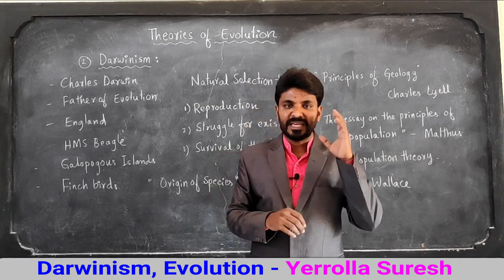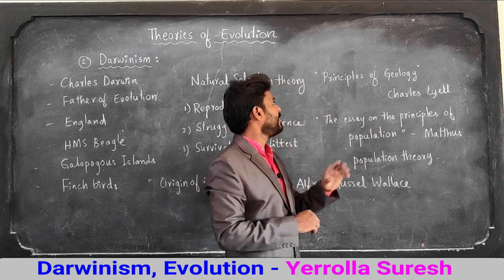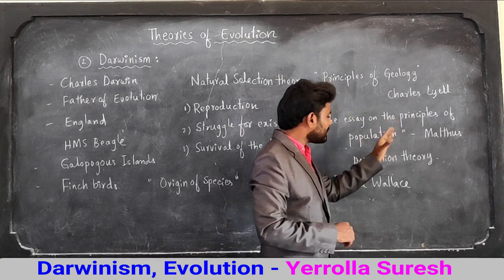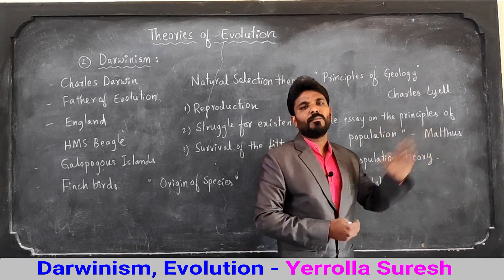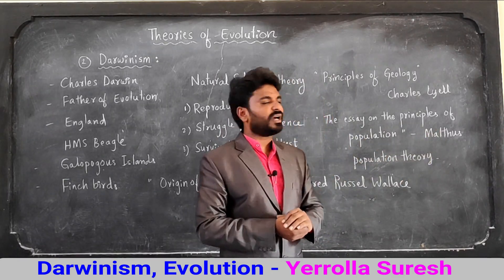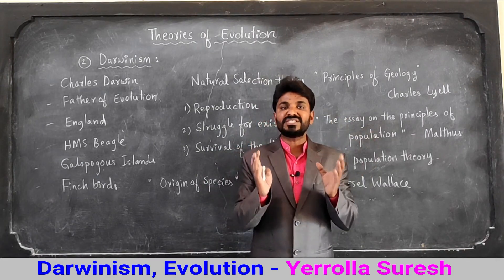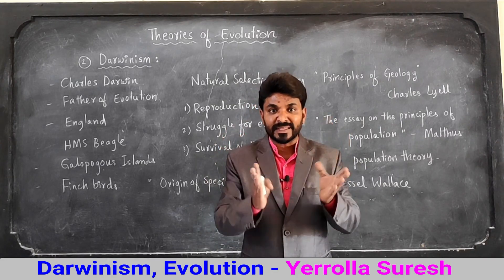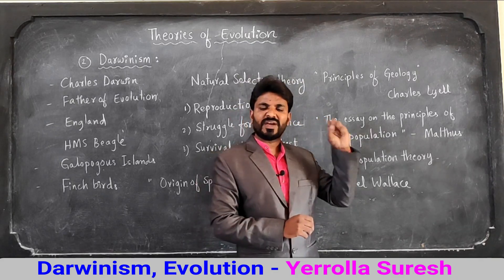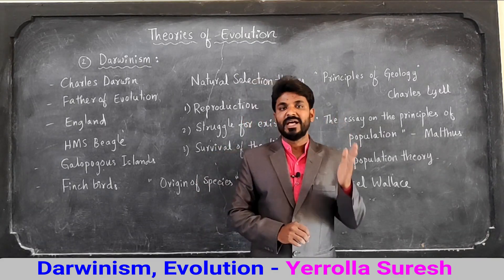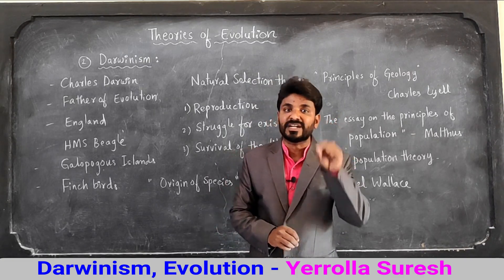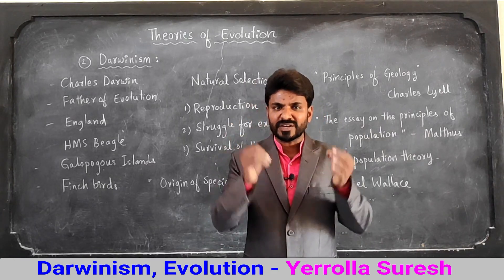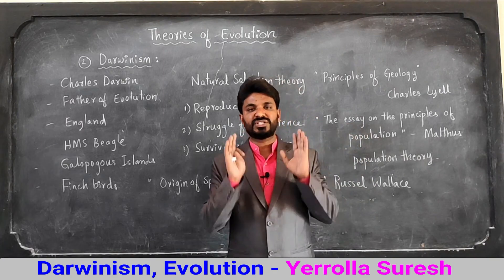Darwin visited many places, collected valuable information, and was especially influenced by two books: 'Principles of Geology' written by Charles Lyell, and 'Essay on the Principle of Population' written by Malthus. In 'Principles of Geology,' Charles Lyell states that changes in organisms take place at a uniform rate. However, Darwin collected information from that book but did not accept Lyell's idea that changes in organisms occur at a uniform rate.